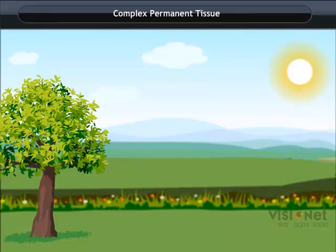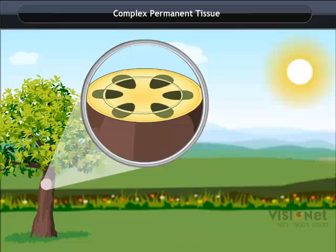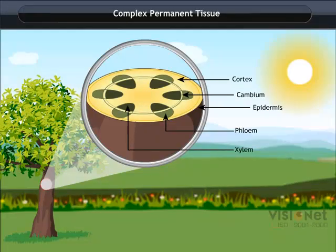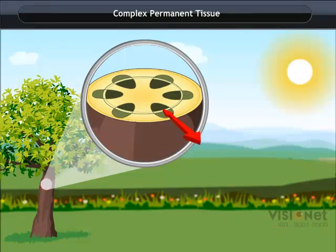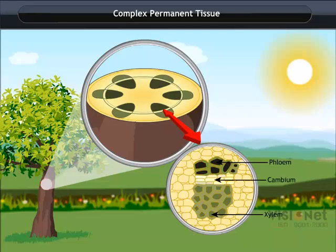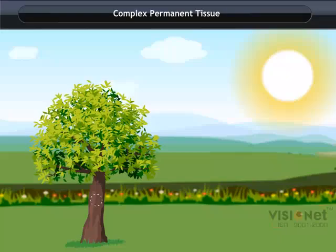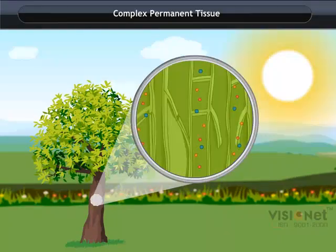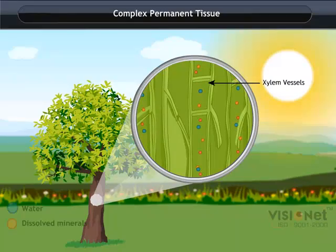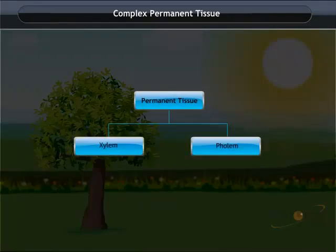Complex permanent tissues are made of more than one type of cells. All these cells coordinate to perform a common function. Xylem and phloem are examples of complex permanent tissue. They are conducting tissues and constitute a vascular bundle, responsible for the conduction of various substances in the plant, including water and dissolved minerals.